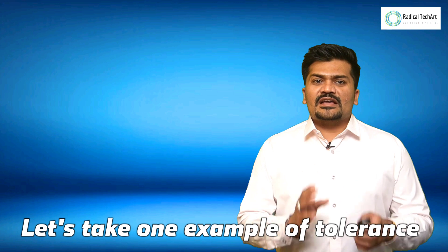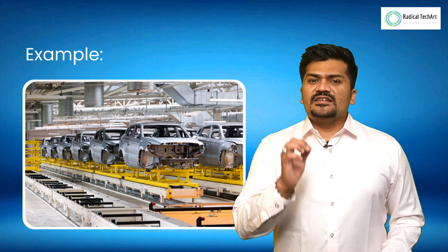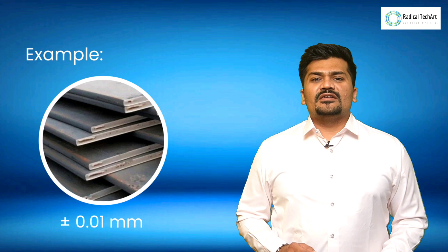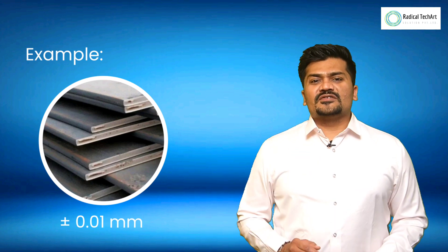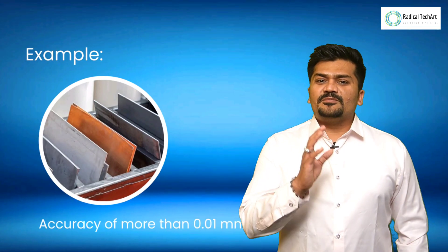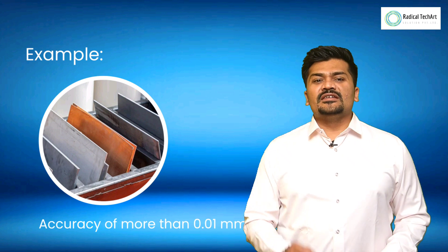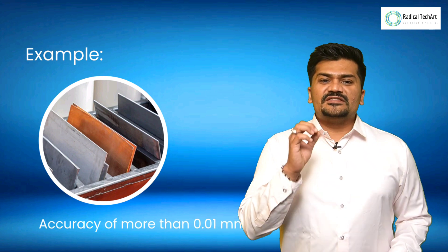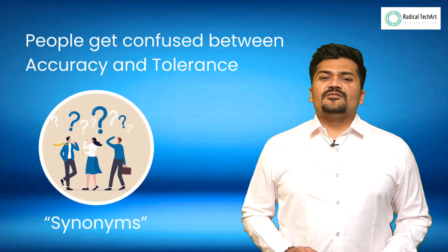Let's take one example for tolerance: in automobile manufacturing, a piece of metal of 10 mm is required with a tolerance of plus or minus 0.01 mm. In this case, the measurement of the length of the metal piece should have an accuracy of better than 0.01 mm.